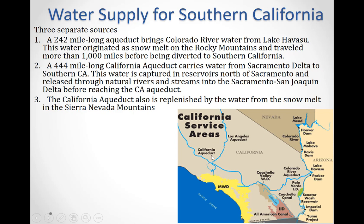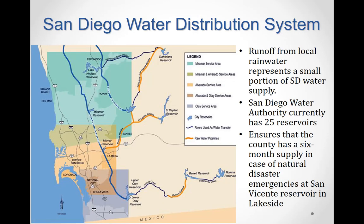The Los Angeles Aqueduct brings snowpack melt from the Sierras into the California Aqueduct, which in turn flows into the Los Angeles area. San Diego's water distribution system taps into these various sources by connecting with the state aqueducts through a first and second aqueduct.